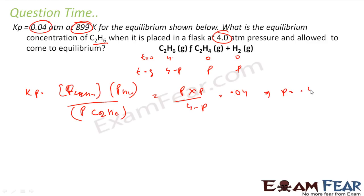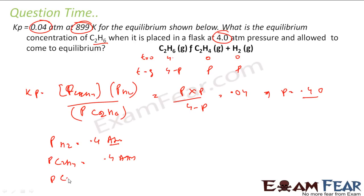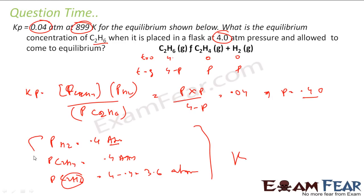If you solve this, p comes out to be 0.40. So if p is 0.40, I have everything now. The pressure of H₂ is 0.4 atm. The pressure of C₂H₄ is 0.4 atm. The pressure of C₂H₆ is 4 minus p, which is 4 minus 0.4, that is 3.6 atm. The question asked only for the partial pressure of C₂H₆, but I also found the partial pressure of H₂.